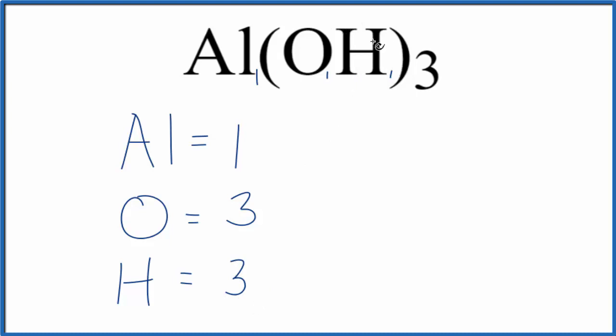So when you have things in parentheses, you multiply things in the parentheses by the subscript. If we wanted to know the total atoms for Al(OH)3, this aluminum hydroxide, we just add these up. Three plus three, that's six, plus one. So we have seven total atoms for Al(OH)3.